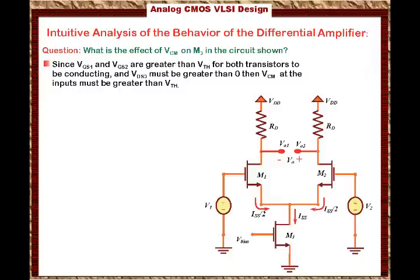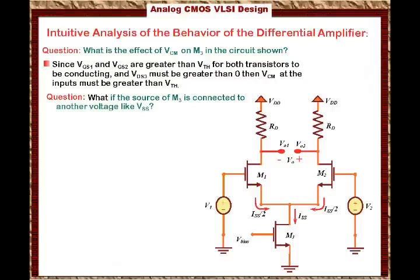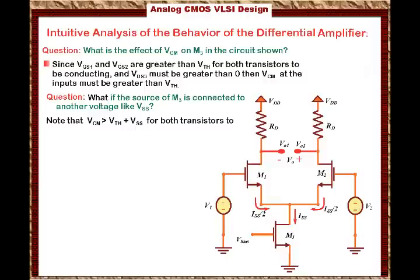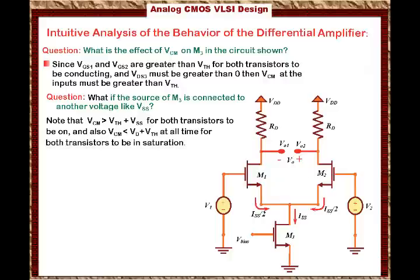Here is another question: what if the source of M3 is connected to another voltage like VSS? When we use op-amps, the power supply can be VDD and minus VEE — for example, plus 15 and minus 15 volts. The negative bias voltage will be at the source of M3. Under this condition, we know that V_common_mode has to be greater than V_threshold plus VSS for both transistors to be on. Also, V_common_mode has to be less than VDD plus the threshold voltage at all times for both transistors to remain in the saturation region.